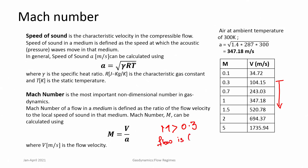The flow is compressible from Mach 0.3 to 0.7. A special case is when it becomes equal to the speed of sound itself, which is Mach number equal to 1. Flows beyond that, when Mach number becomes greater than 1, have notable differences. Let us look at how the flow can be classified into different regimes.